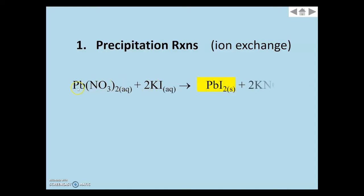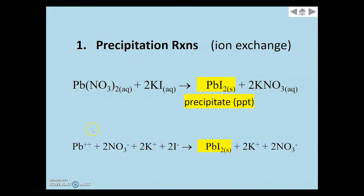We have just seen that lead nitrate, a clear solution, plus potassium iodide, also a clear solution, makes instantly this bright yellow lead iodide precipitate. Don't forget that these AQ symbols mean that the ions are all separated. They are all dissolved. Lead iodide is insoluble. Meaning when these are put in together, they automatically stick together, forming the precipitate.